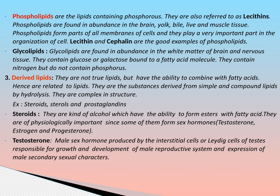Glycolipids are found in abundance in the white matter of the brain and nervous tissue. They contain glucose or galactose bound to a fatty acid molecule, and contain nitrogen but do not contain phosphorus. Derived lipids are not true lipids but have the ability to combine with fatty acids, hence are related to lipids. They are substances derived from simple and compound lipids by hydrolysis and are complex in structure. Examples of derived lipids are steroids, sterols and prostaglandins.